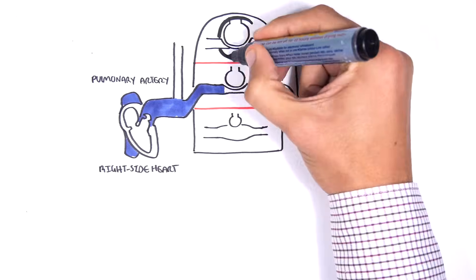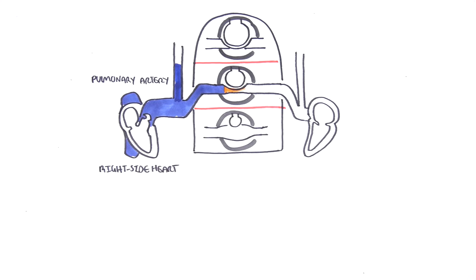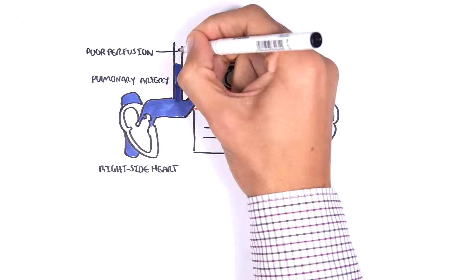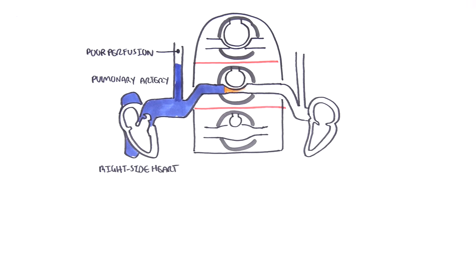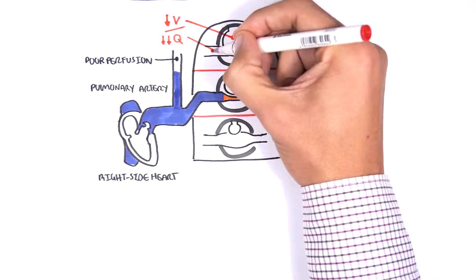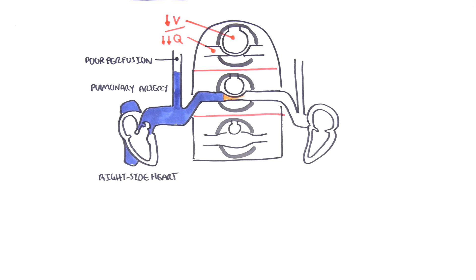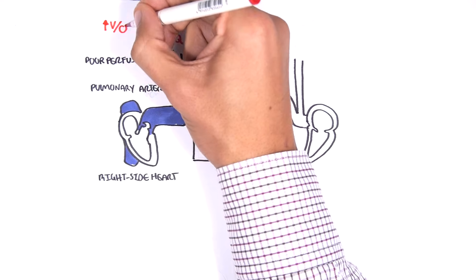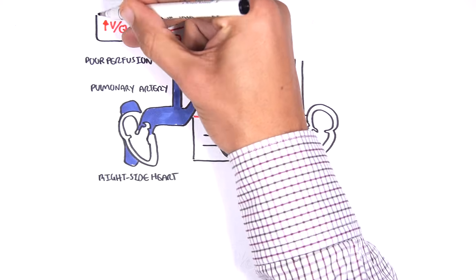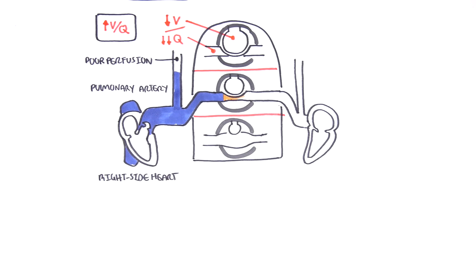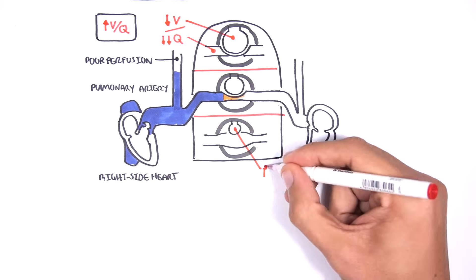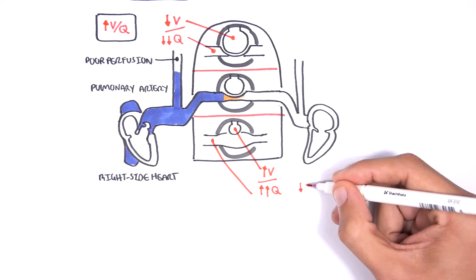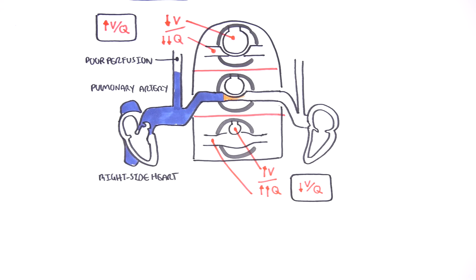Gas exchange occurs in the lungs, then the pulmonary vein returns the newly oxygenated blood to the left side of the heart. In the middle zone of the lung, perfusion is good and ventilation is good. Perfusion to the apex of the lung is poor — you have a decrease in Q. Ventilation is lower at the apex of the lung, but not as bad as perfusion, so the VQ ratio is high here. As you go to the base of the lung, ventilation increases but perfusion increases a lot more, so your VQ ratio decreases at the base.